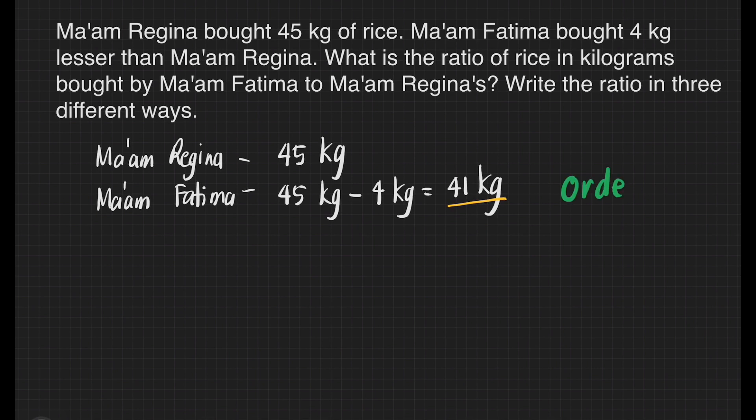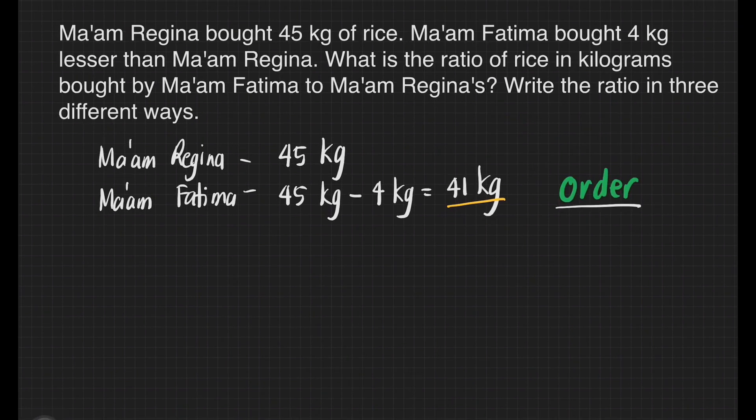We have also to take note that the order is important for ratio because whatever is mentioned first, it should be written first. In this case, it was mentioned first that we have to get Ma'am Fatima's number of kilograms of rice. Compare it to Ma'am Regina's. Let us take note of that.